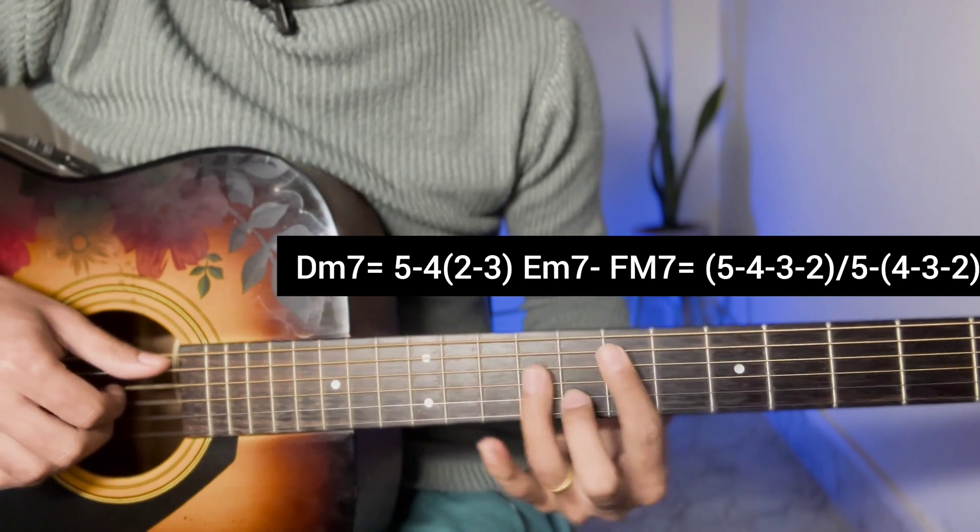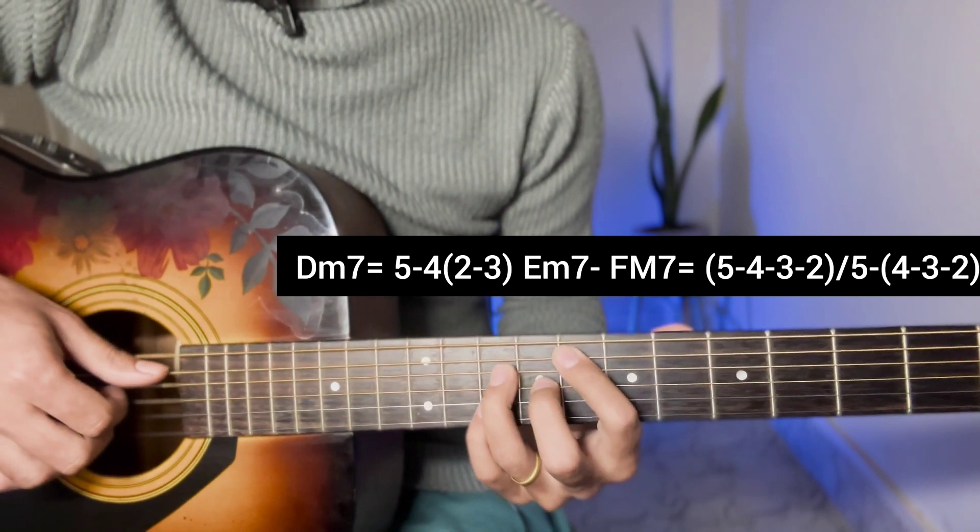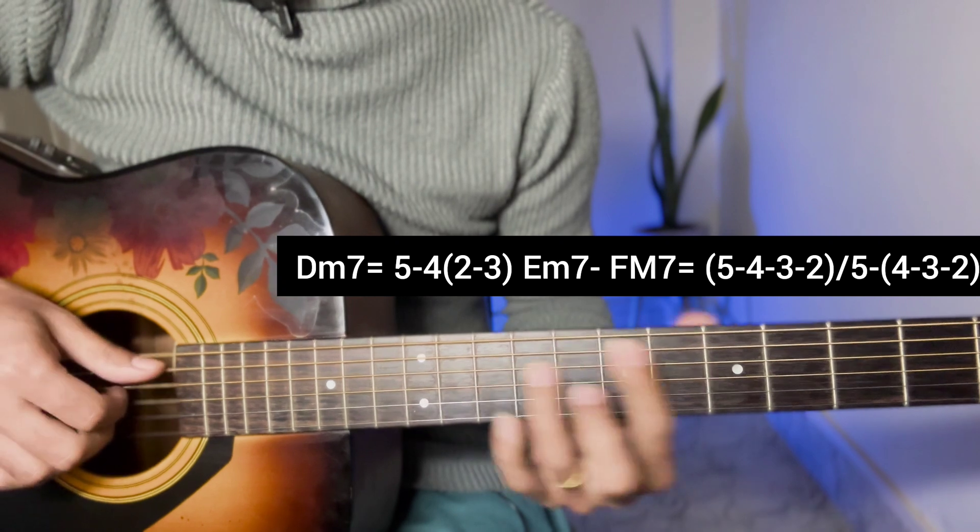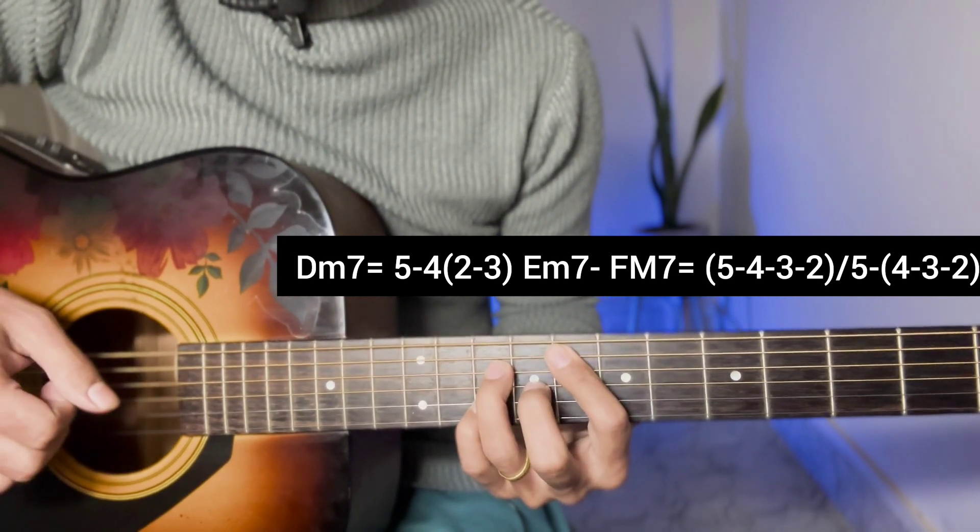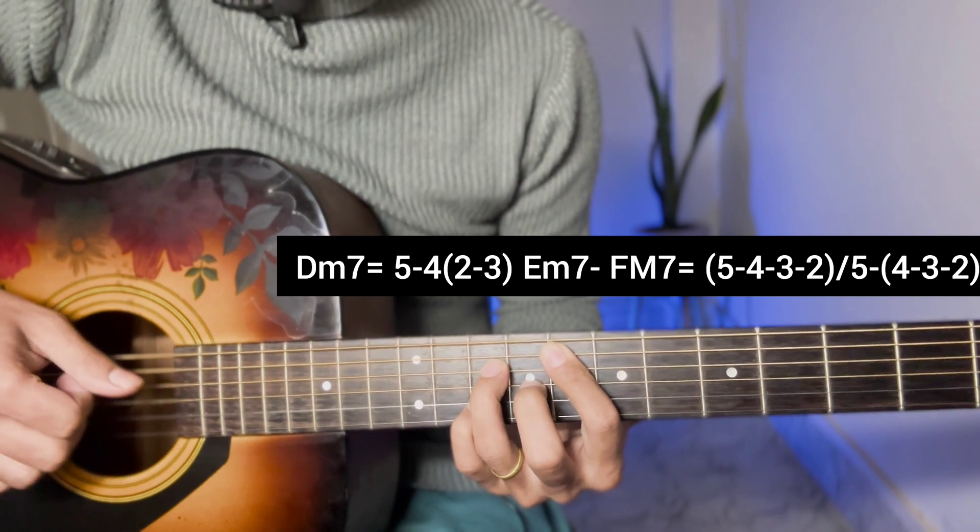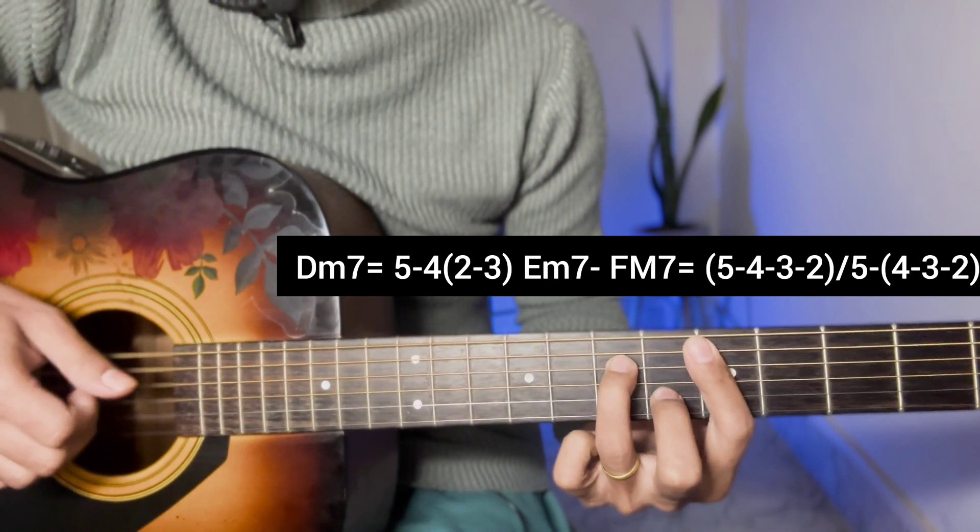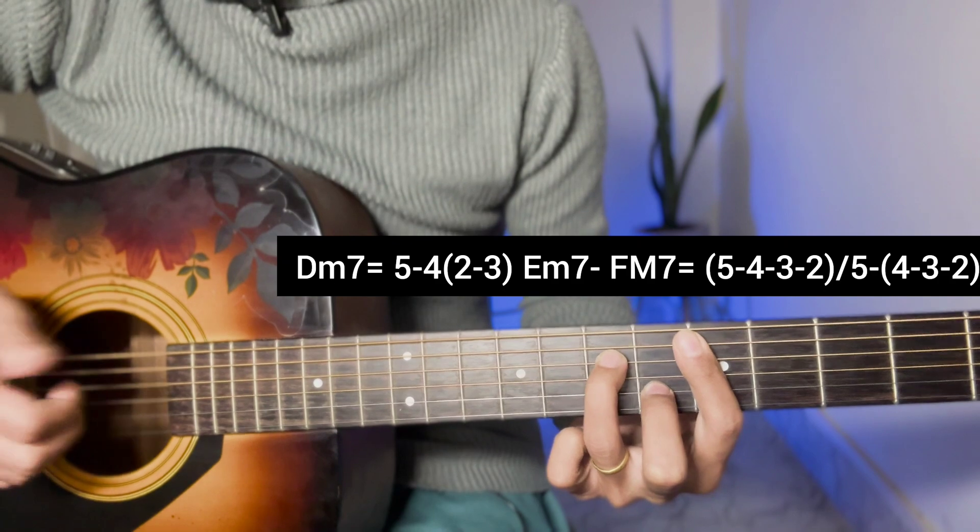So the progression is D minor 7, E minor 7, F major 7. This is the timing. So this is the line. For you, for you.